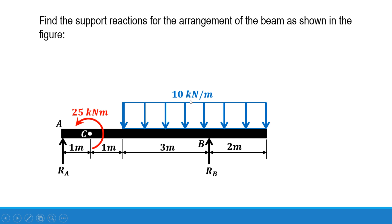The meaning of uniformly distributed load is that for 1 meter length the load acting is 10 kN, so for 5 meters it will be 10 into 5, that is 50 kN. As it is a rectangular distribution, it will act at the center of the rectangular section — at 3 plus 2 that is 5, divided by 2, that is 2.5 meters.